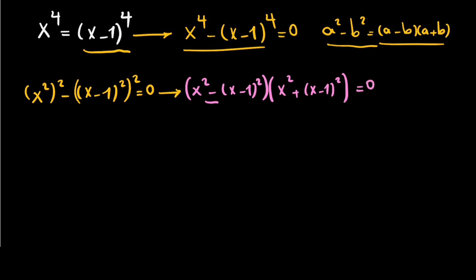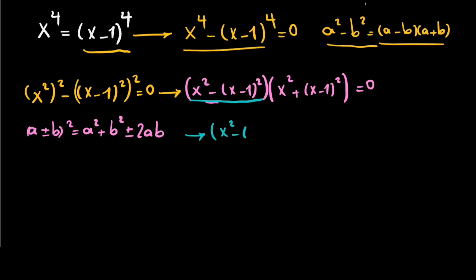You know that (a minus b) squared equals a squared minus 2ab plus b squared. So in this case we can expand: the first factor gives x squared minus (x squared minus 2x plus 1), and the second factor gives x squared plus (x squared minus 2x plus 1).